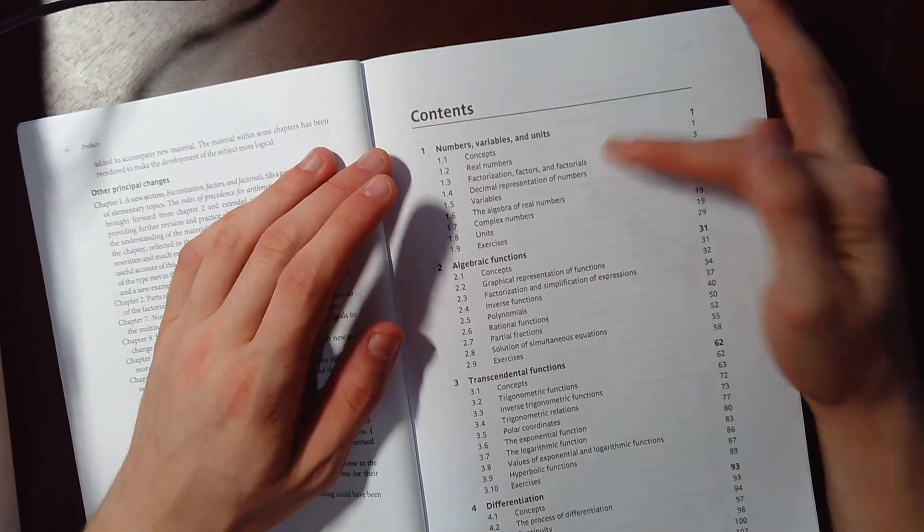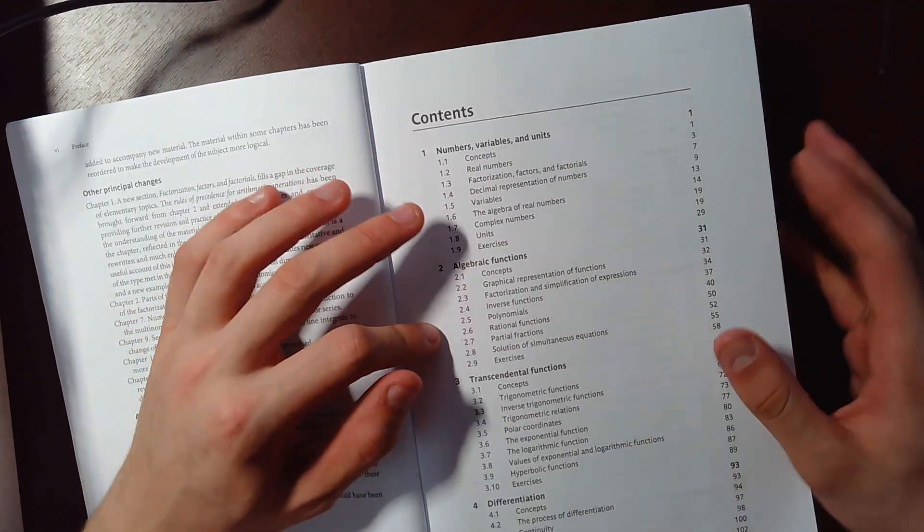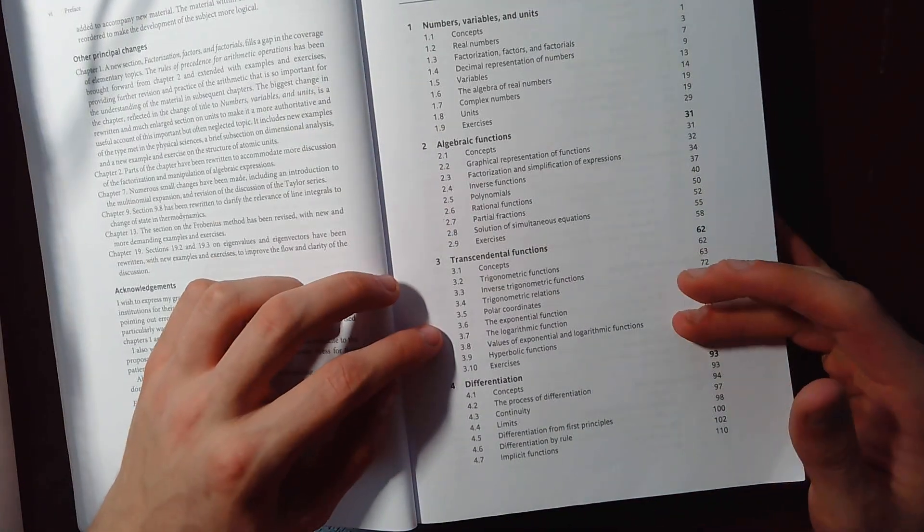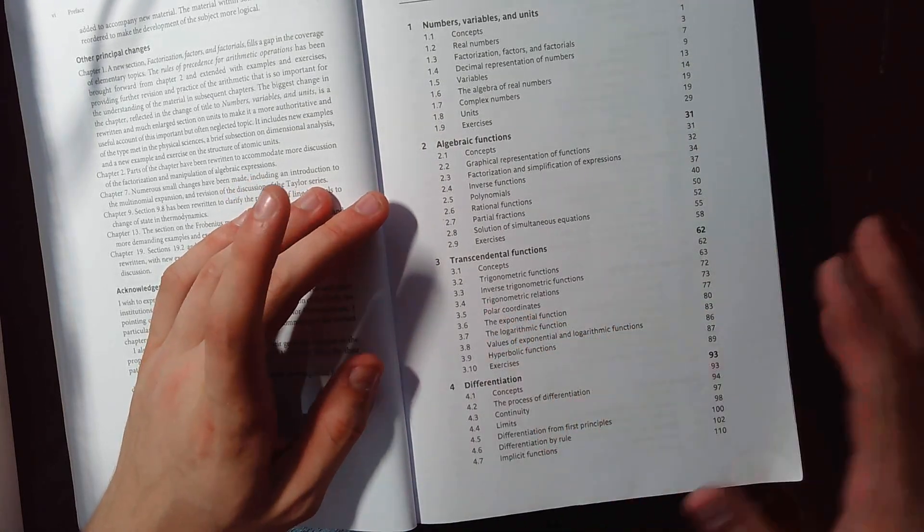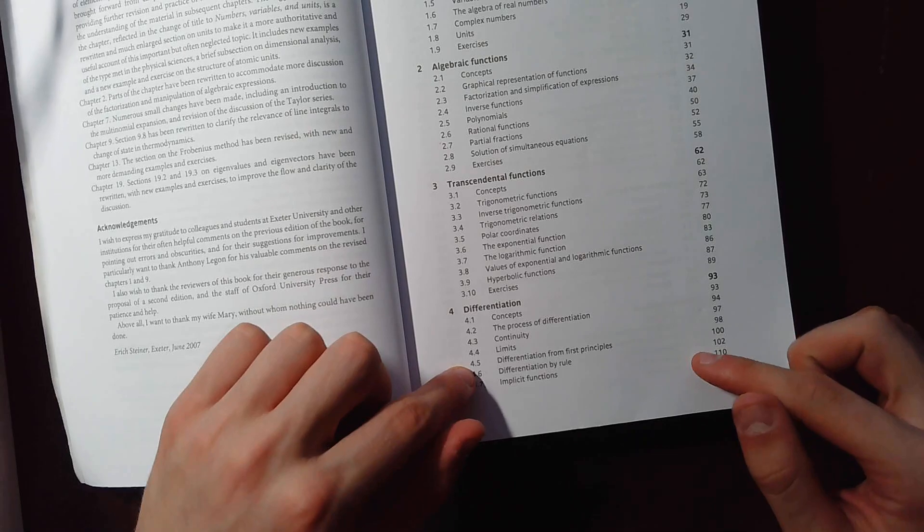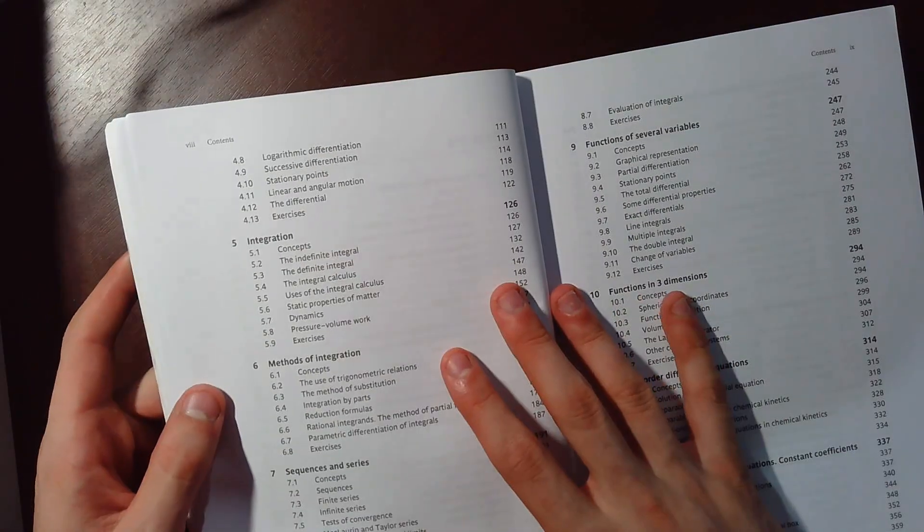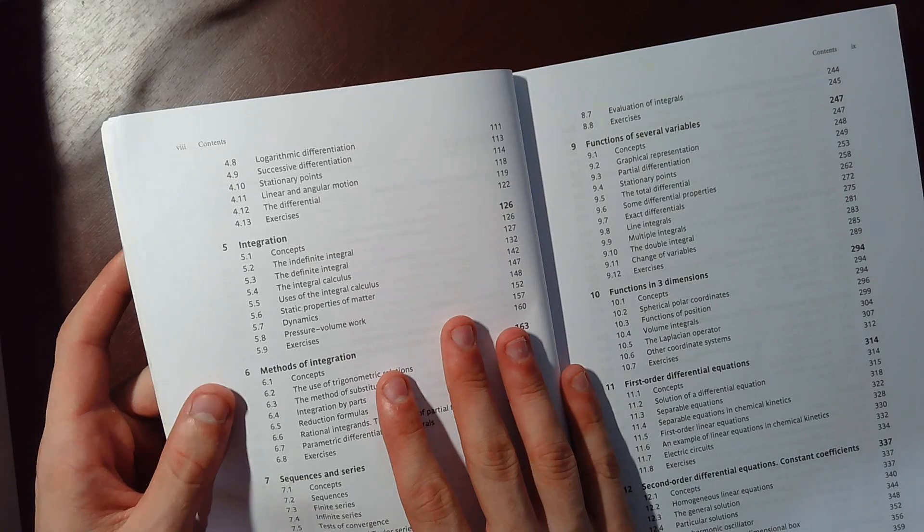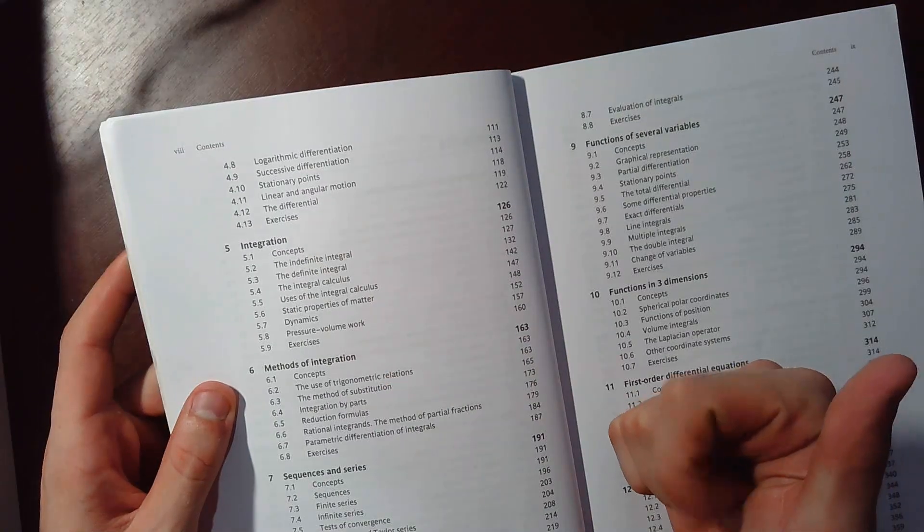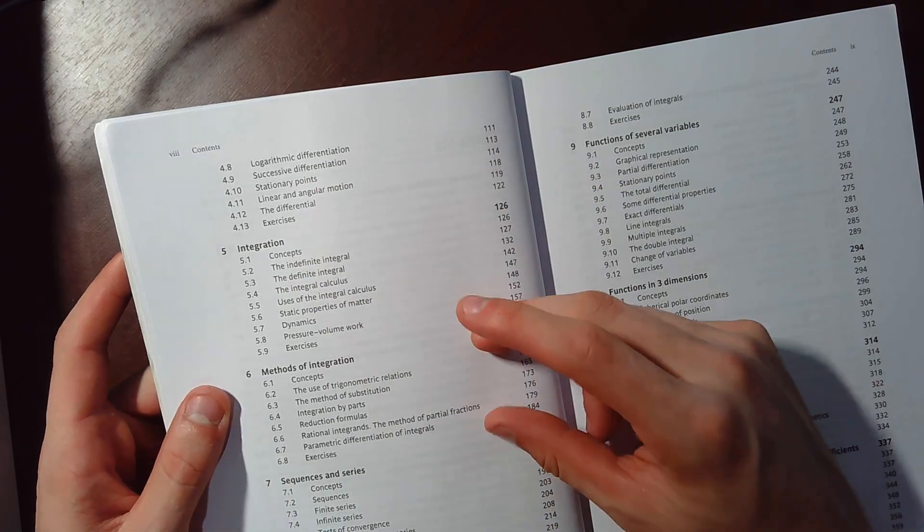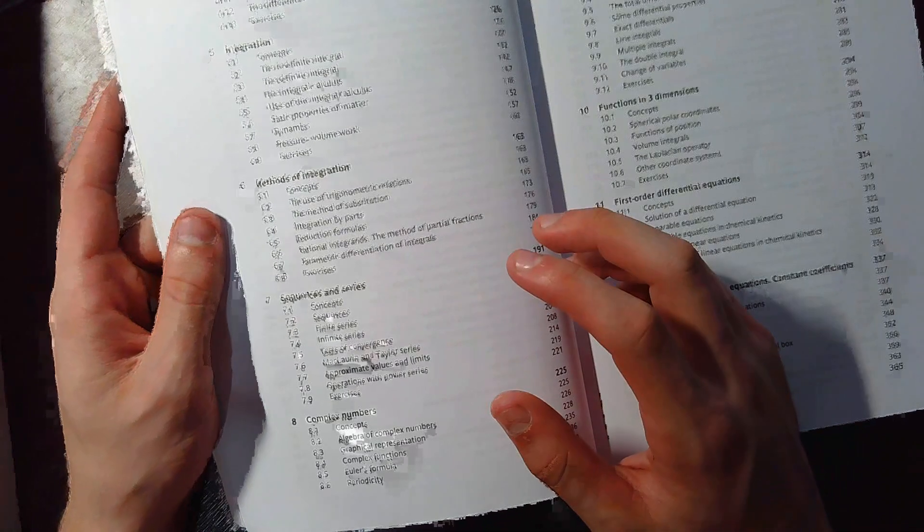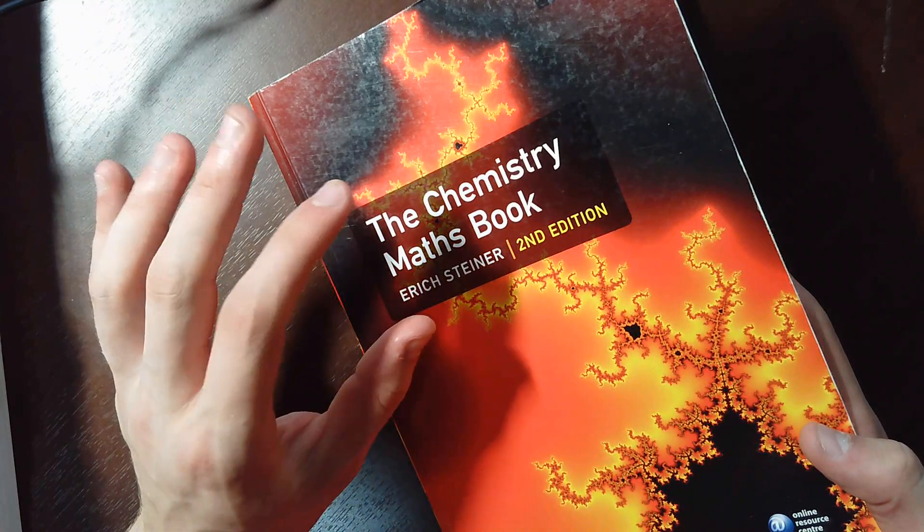So let's go back to the table of contents. So numbers, variables, units, algebraic functions, transcendental functions, so your inverse trig and all your crazy ones, like your logarithm exponentials. It's even got some little polar coordinates and stuff. Differentiation. So it goes over calculus. It is a huge, it goes over a lot of calculus. So it even goes into some examples like angular momentum, stationary points. Integration, basic stuff. Methods of integration. Series and sequences. That's a bit insane, considering this is meant to be a chemistry math book.